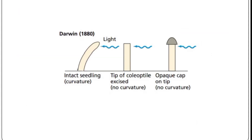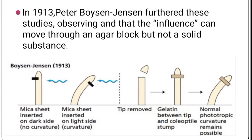Darwin concluded in 1880 that a growth stimulus is produced in the coleoptile tip and is transmitted to the growth zone. In 1913, Peter Boysen Jensen furthered these studies, observing that the influence can move through an agar block but not a solid substance. He separated the tip from the remainder of the coleoptile by a cube of gelatin, which prevented cellular contact but allowed chemicals to pass through. The seedlings responded normally, bending towards the light.